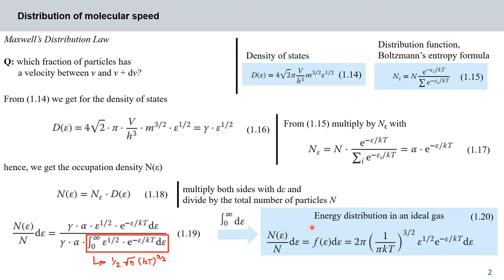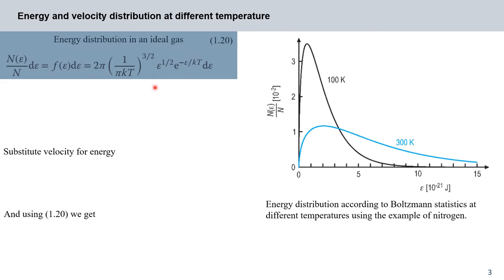This gives us the energy distribution in an ideal gas in the form of equation 1.20: n(ε)/N · dε = 2π · (1/πkT)^(3/2) · ε^(1/2) · e^(−ε/kT) · dε. This energy distribution function is plotted in the figure on the right for nitrogen at temperatures of 100 K and 300 K.